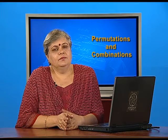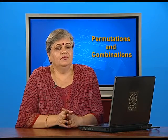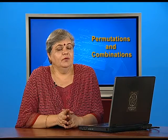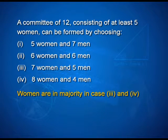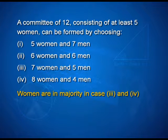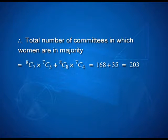In the second part of the problem, the women have to be in majority. Looking at our cases, women are in majority only when there are 7 women and 5 men, or 8 women and 4 men. Therefore, the total number of ways in which such a committee can be formed will be 8C7 × 7C5 plus 8C8 × 7C4, giving rise to a number of 203.